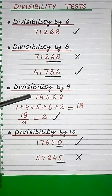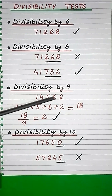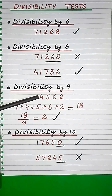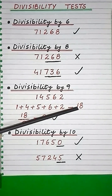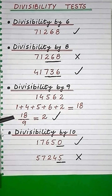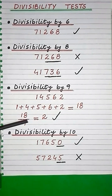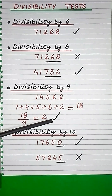A number is divisible by 9 only if the sum of all digits present in it is a number which is also divisible by 9.